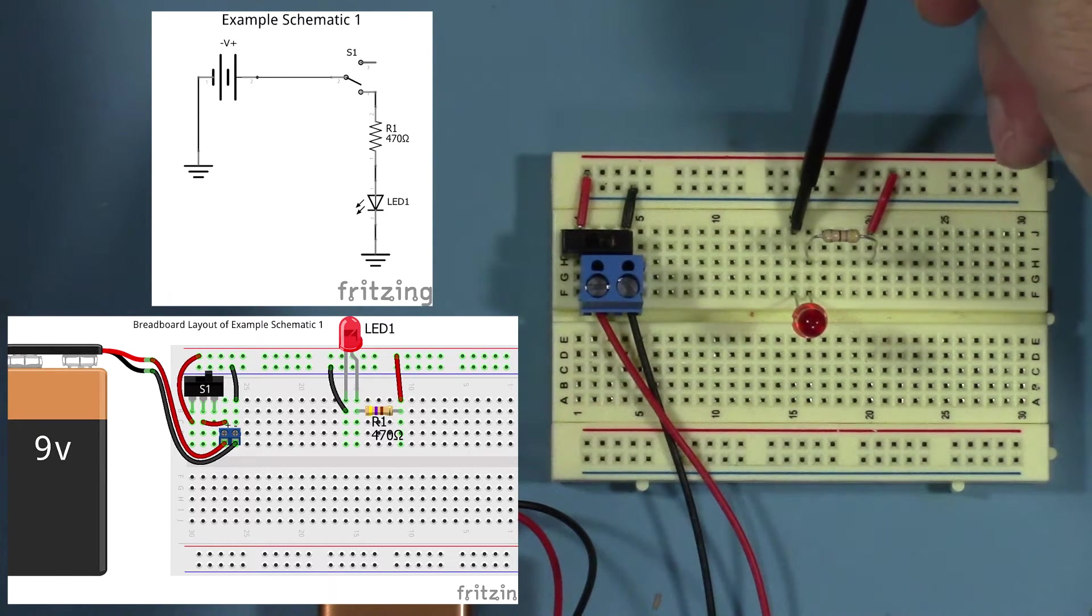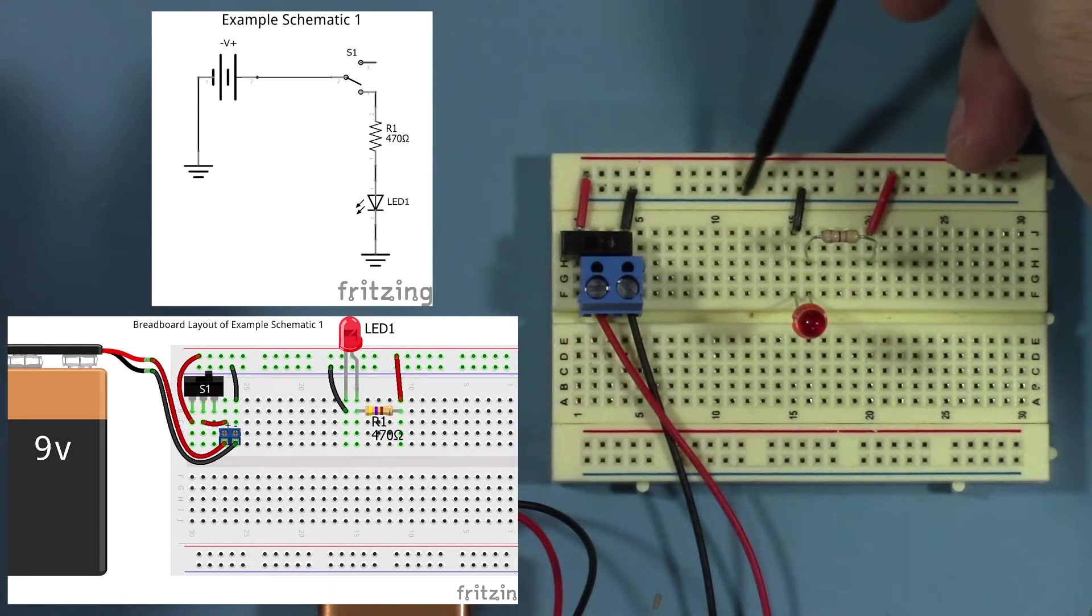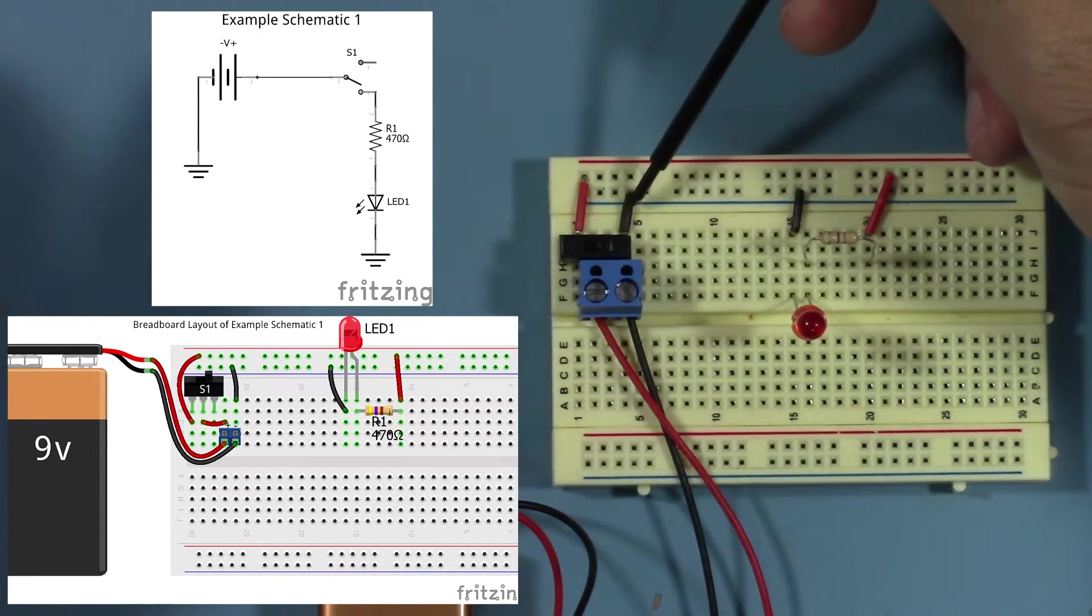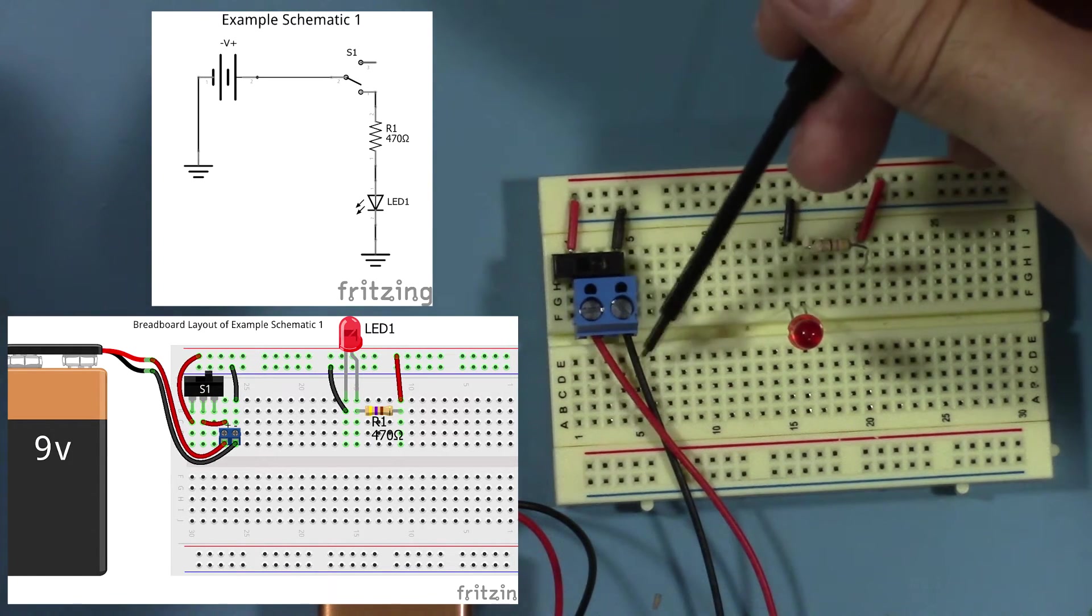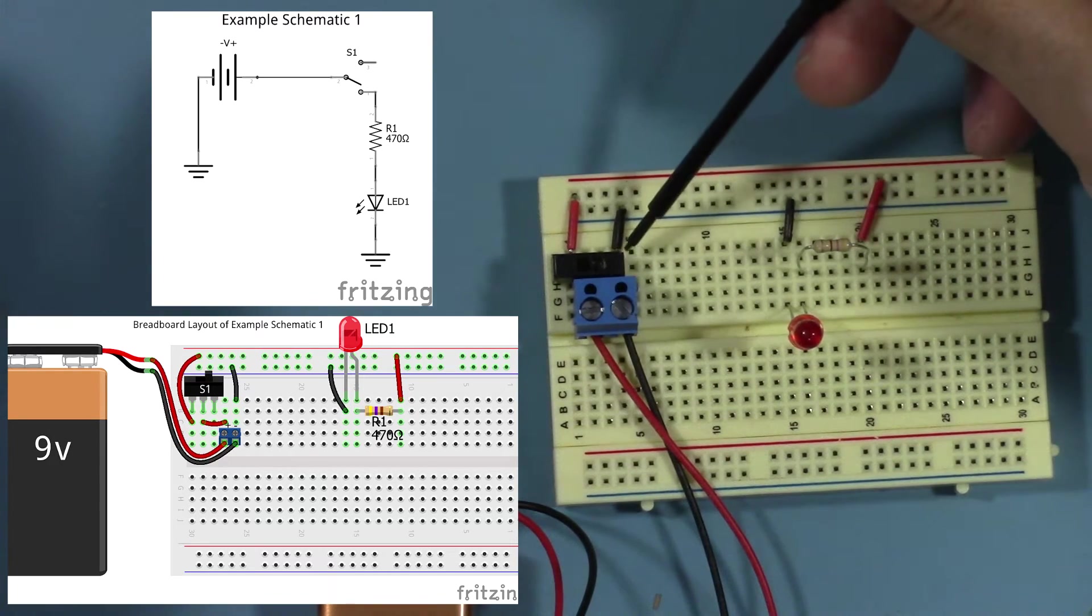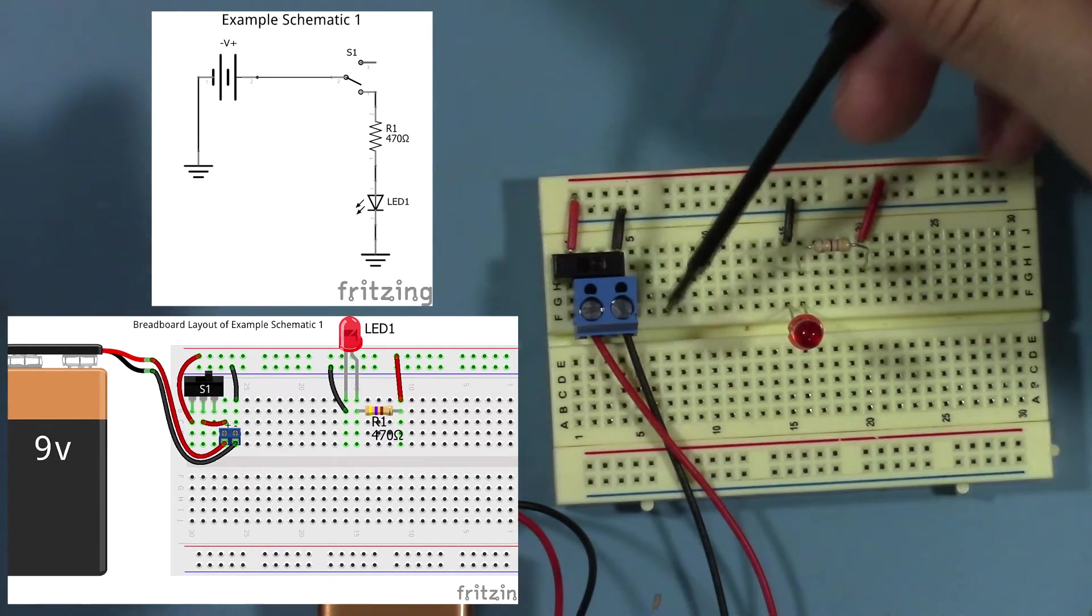Over to this black wire on row 15, to this lower terminal, back over to this wire, which goes straight into the black lead of the 9-volt battery.